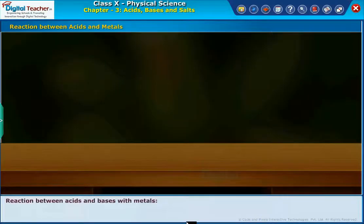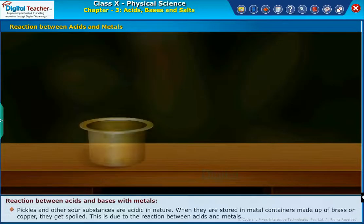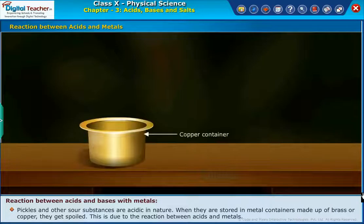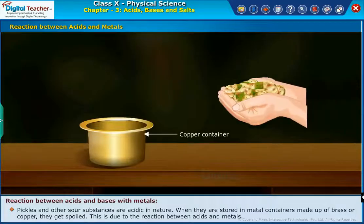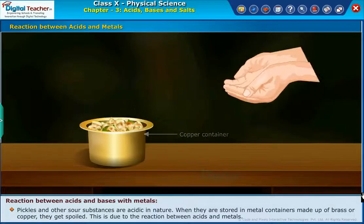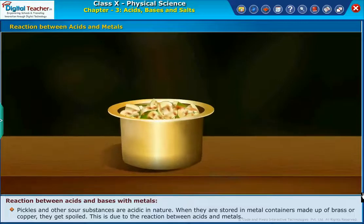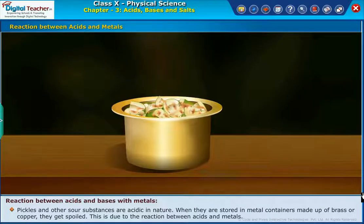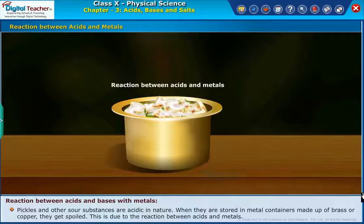Let us learn about the reaction between acids and bases with metals. Pickles and other sour substances are acidic in nature. When they are stored in metal containers made up of brass or copper, they get spoiled. This is due to the reaction between acids and metals.